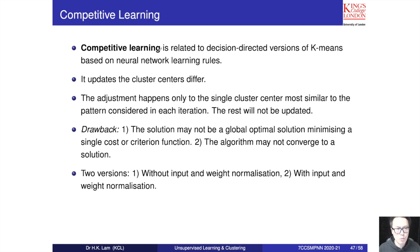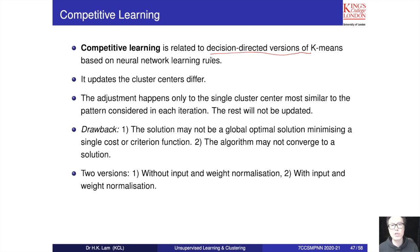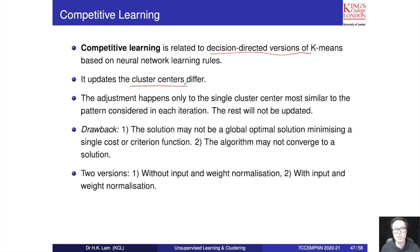Competitive learning is a kind of decision-directed version of the k-means clustering method, based on a neural network learning rule. The update rule is very similar to the gradient descent rule, and the update is based on the difference between the samples and the clusters. Each time we pick a single winner cluster center to update; all the rest remain the same.